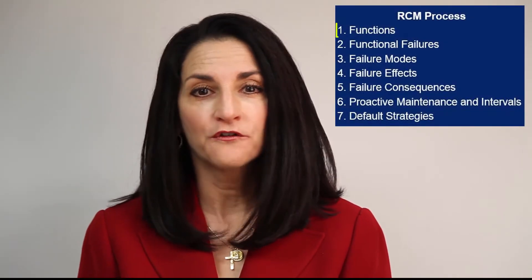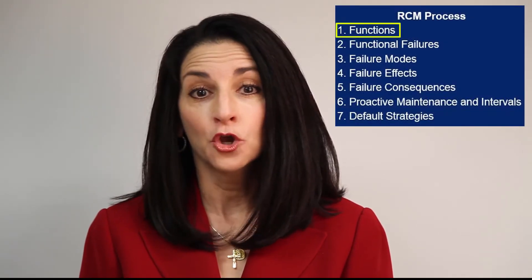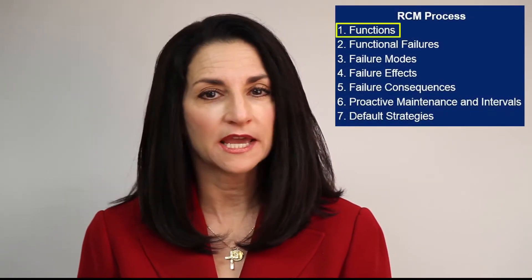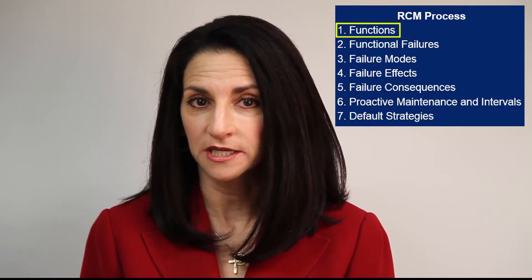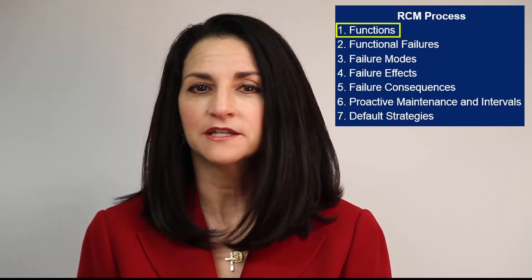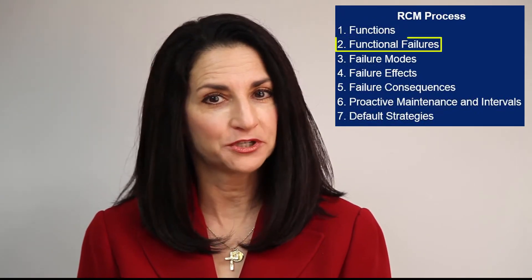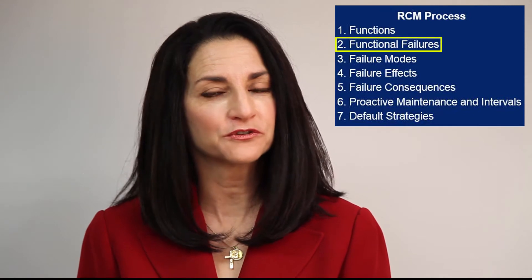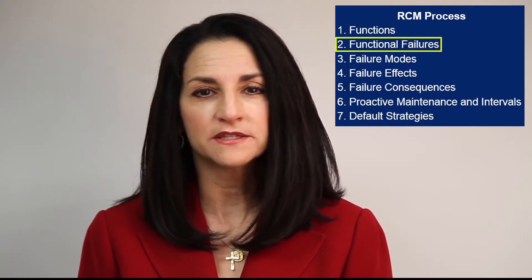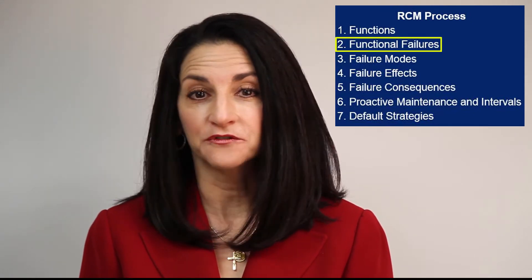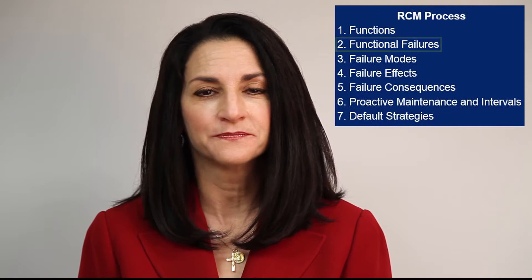RCM consists of seven steps. Step 1 – Functions – Record what the asset does, as opposed to what it is, including required standards of performance. Step 2 – Functional Failures – Document the ways in which the asset can fail to fulfill its functions.